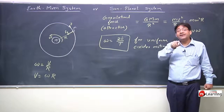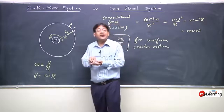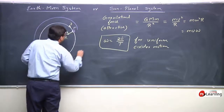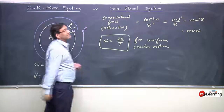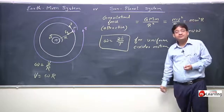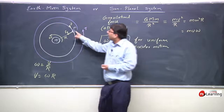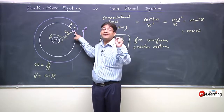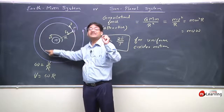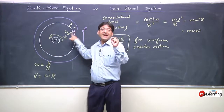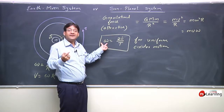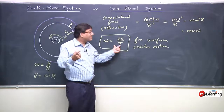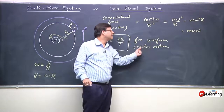The time period is the time duration in which a particle returns back to its same position. The angular displacement is 2π and the time taken for this angular displacement is T. Angular velocity is the rate of change of angular displacement: 2π divided by T. But this definition holds only for uniform circular motion.